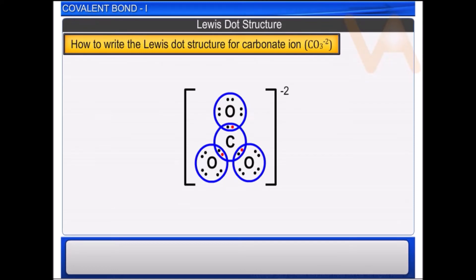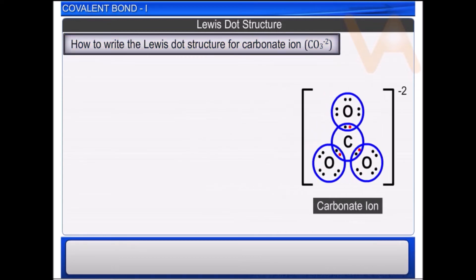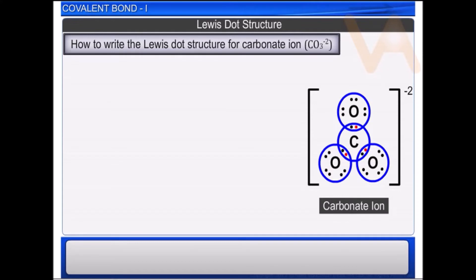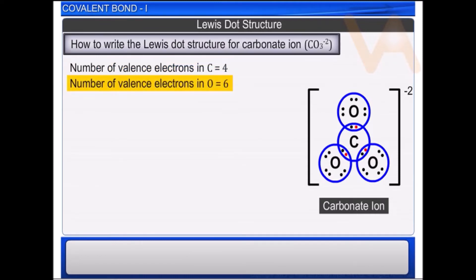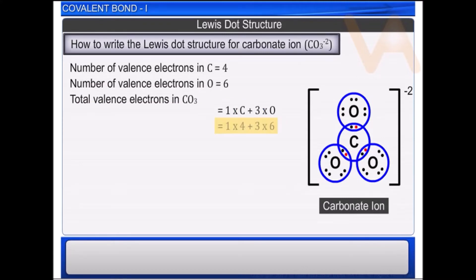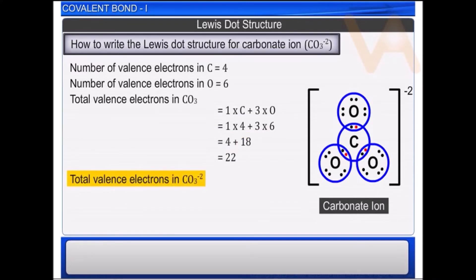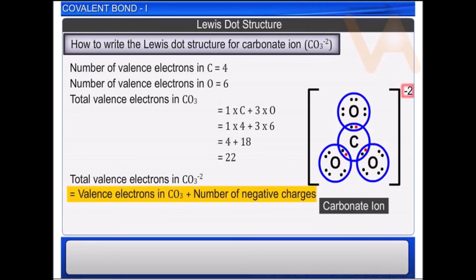Now let's see how to write the Lewis dot structure for the carbonate ion. First, let us calculate the total number of valence electrons. The number of valence electrons in carbon is 4, whereas the number of valence electrons in oxygen is 6. As three oxygen atoms are present, the valence electrons in three oxygen atoms is 18. As two negative charges are present on the carbonate ion, add 2 to the total, giving 22. Hence, the total valence electrons in carbonate ion is 22 plus 2 equals 24.